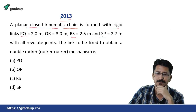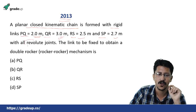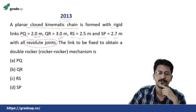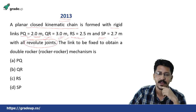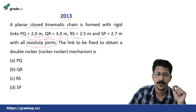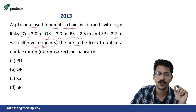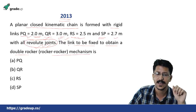The GATE 2013 question says: a planar closed kinematic chain is formed with rigid links PQ, QR, RS, and SP with respective lengths of 2 m, 3 m, 2.5 m, and 2.7 m, with all revolute joints. This is a four-bar mechanism with all turning pairs. The question asks which link is to be fixed to obtain a double rocker mechanism.